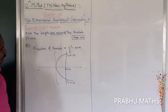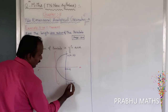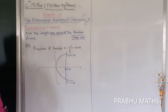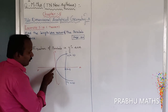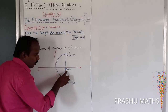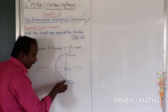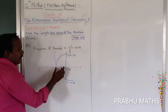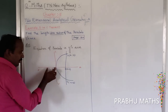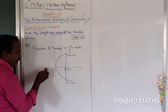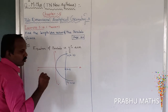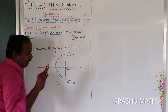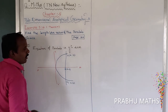The coordinates are (a, -y1) and (a, y1). We know the vertex point, the focus, the latus rectum, and the directrix. The directrix is in the negative x-direction. So we have: directrix, vertex, focus, and latus rectum. Now we need to find the length of the latus rectum.